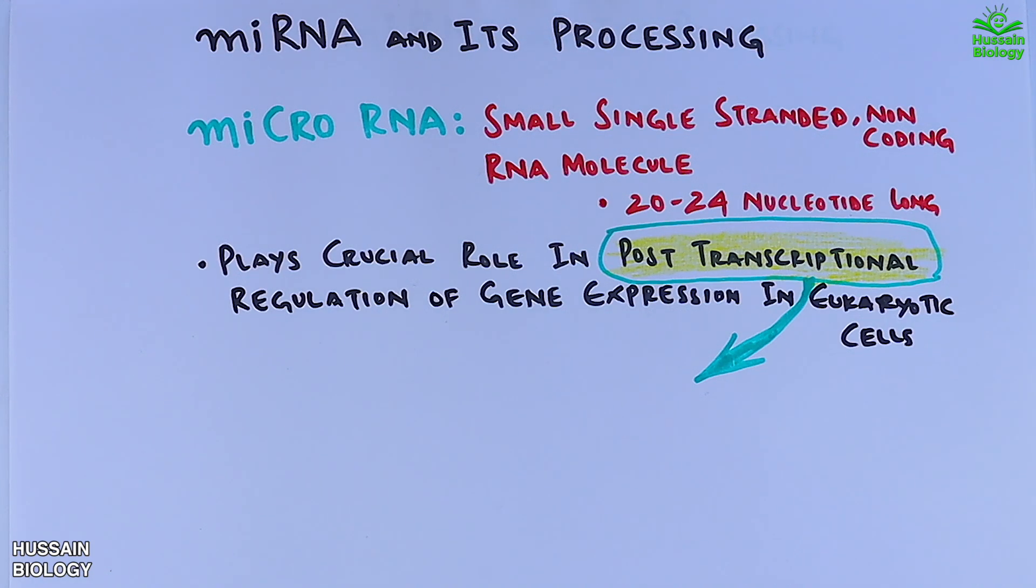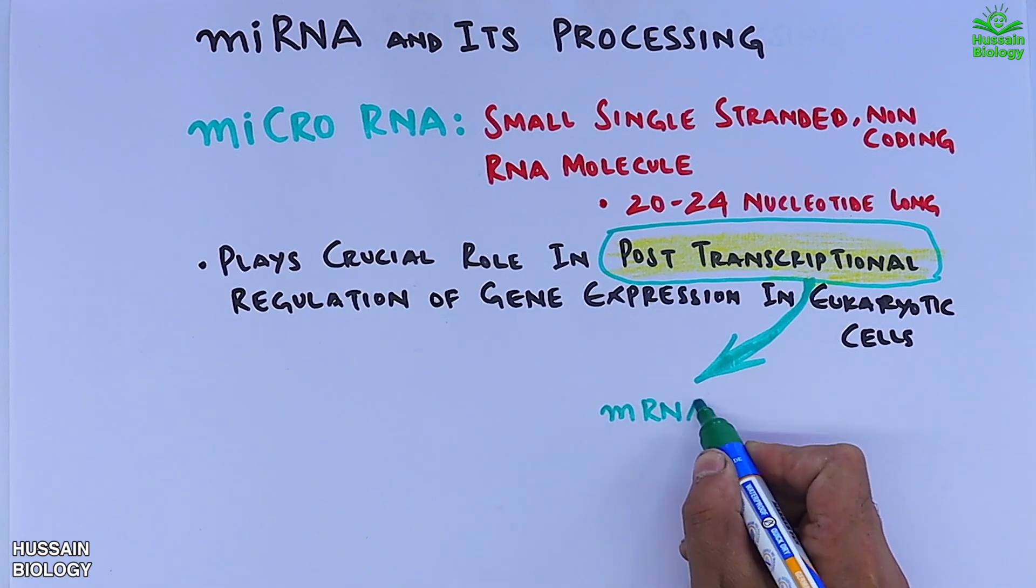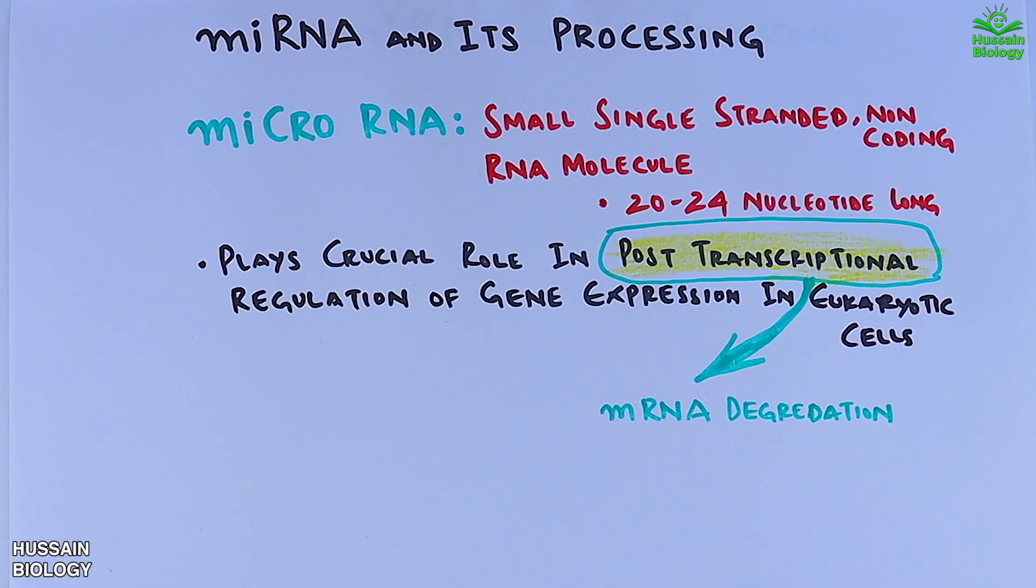miRNAs regulate gene expression through three main mechanisms. First, mRNA degradation: miRNAs can bind specific mRNA molecules, marking them for degradation. This prevents the mRNA from being translated into proteins.